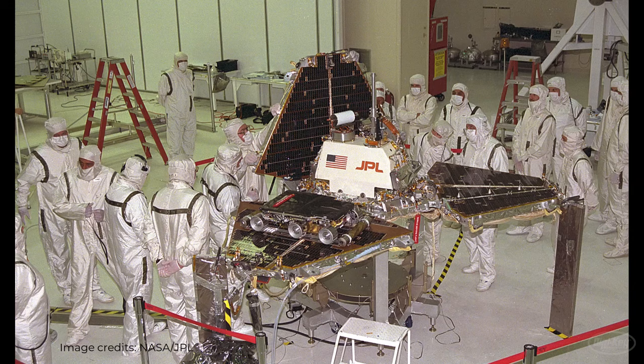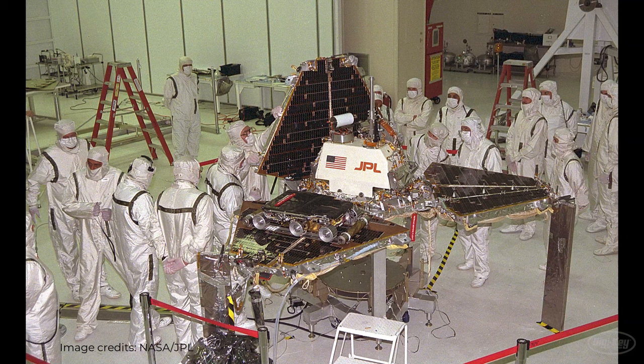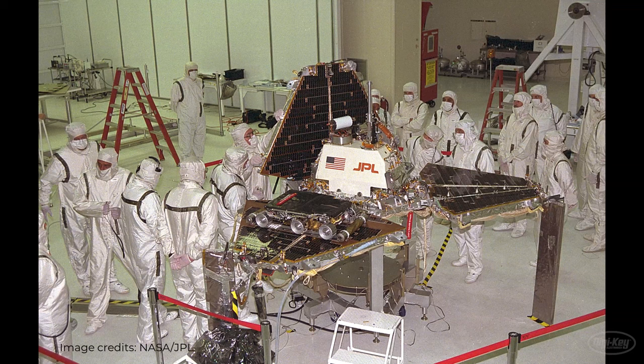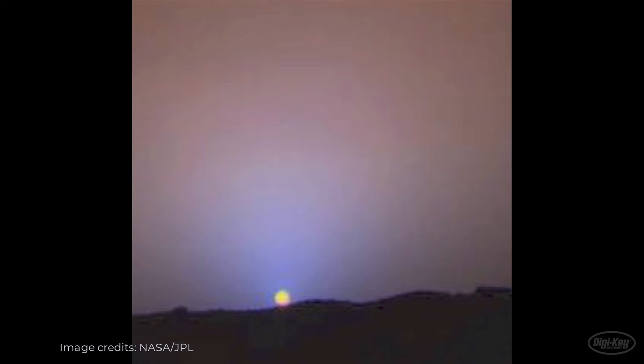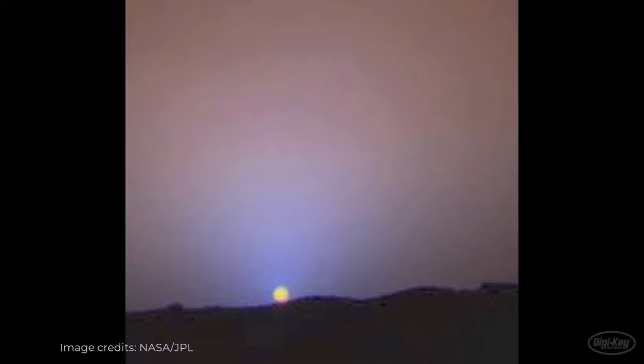JPL engineers worked tirelessly over the next few days to find and fix the bug using a replica of the lander in their lab. Tracing thread execution eventually allowed them to spot the unbounded priority inversion and come up with a solution involving priority inheritance, which we'll look at in a minute. They uploaded a patch to the lander where it continued operating for a few more months, collecting soil samples and sending back fantastic photos like this one.